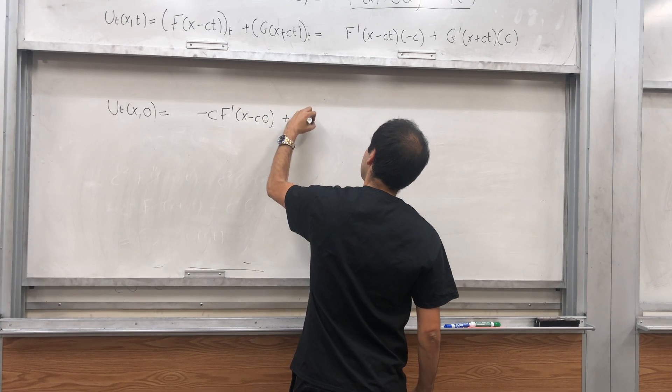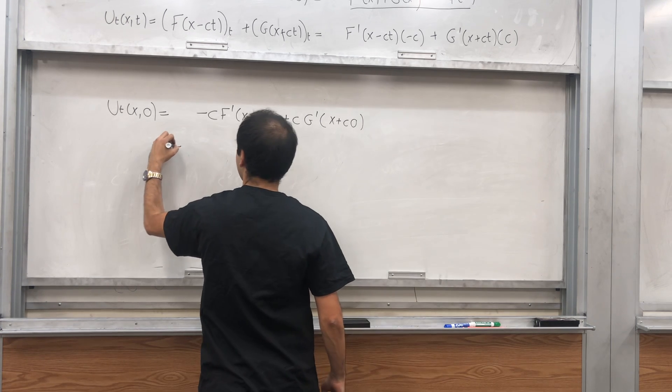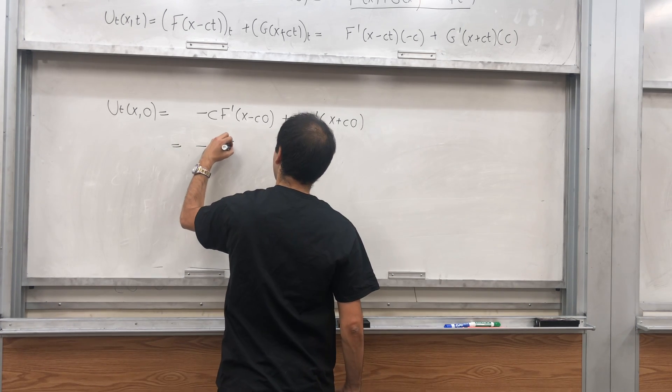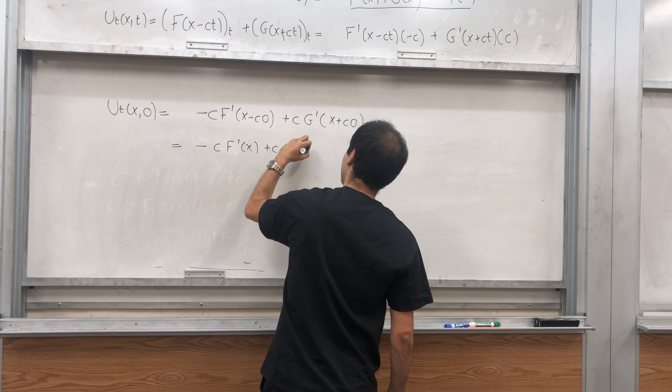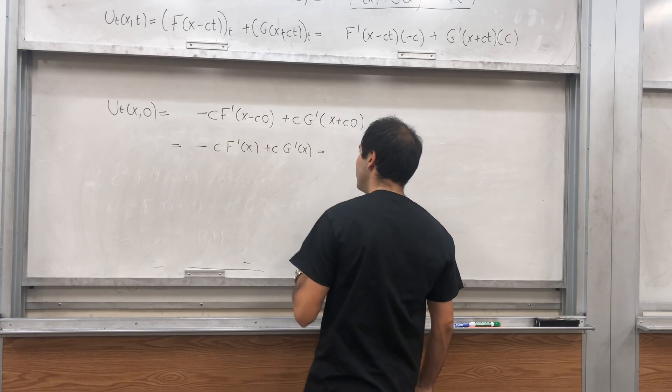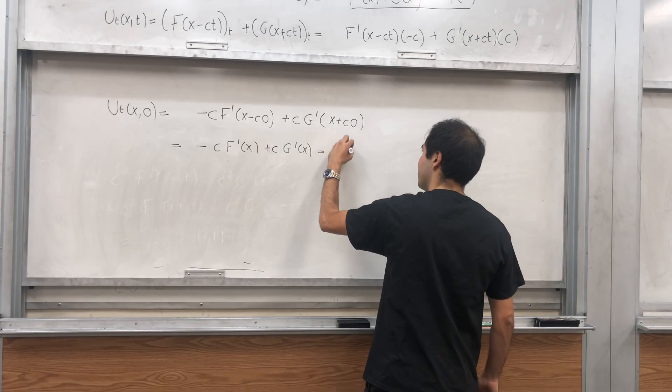u_t(x,0) becomes minus C F prime of x minus c times zero, plus C G prime of x plus c times zero, and that becomes minus C F prime of x plus C G prime of x. And we know that this is by definition u_t(x,0), which is psi of x.